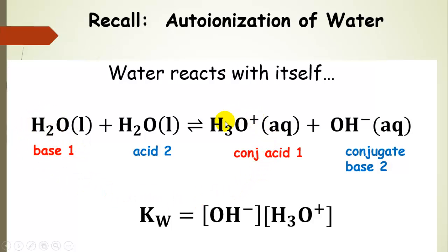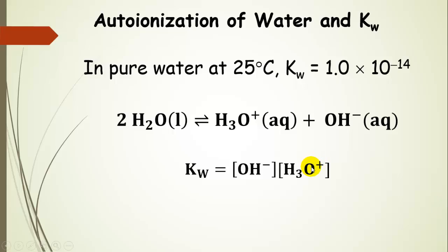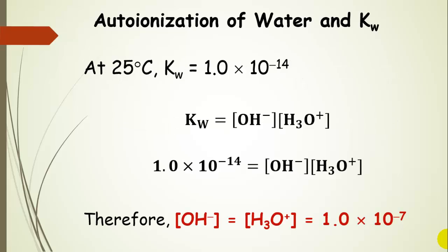Water acting as a base has a conjugate acid, which is hydronium. Water acting as an acid has a conjugate base, hydroxide. When we multiply the concentration of hydroxide and hydronium together, we get KW. In pure water, KW is 1.0 times 10 to the negative 14, giving us 1.0 times 10 to the negative 7 for both the hydroxide and hydronium ion concentrations — they are equal in pure water.